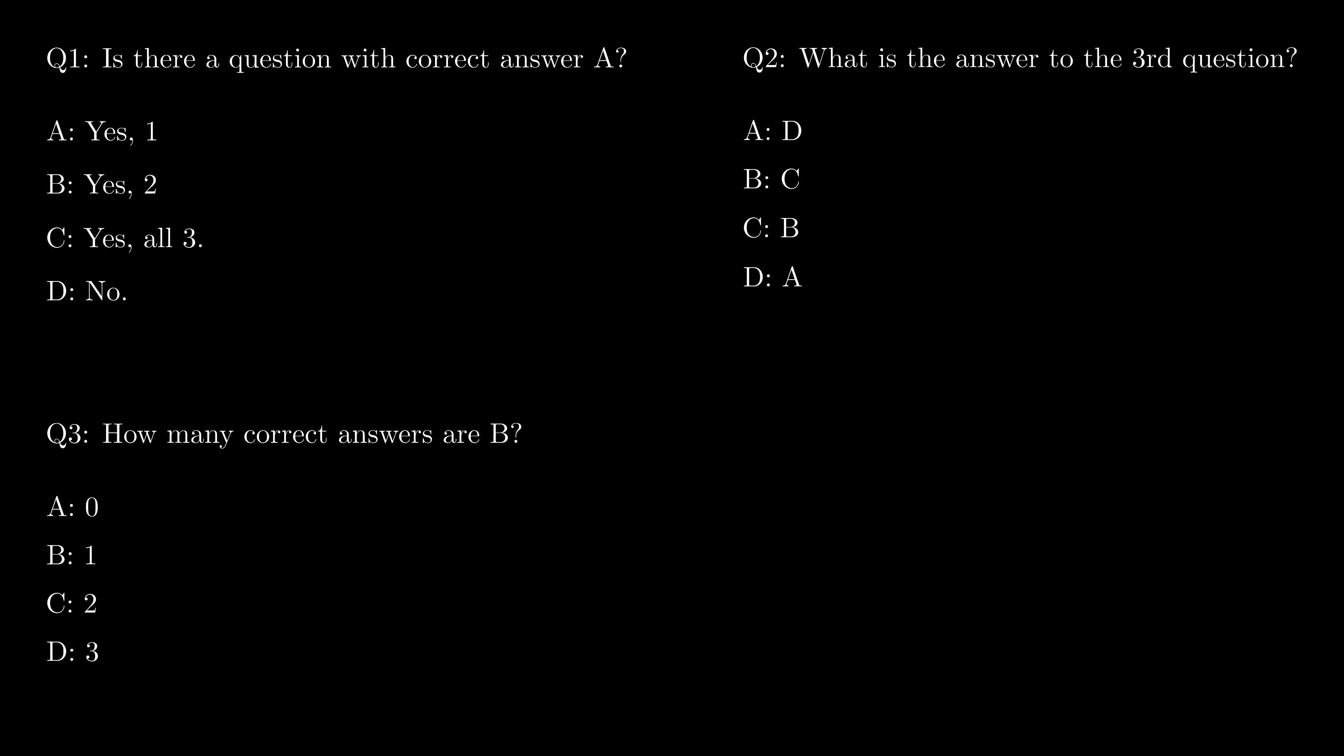What if question two's answer is C? Then question three must have answer B, but there is only one correct answer B. Then the only logical answer for question one is D. We see that this combination is self-consistent and this is indeed the only solution to the puzzle.